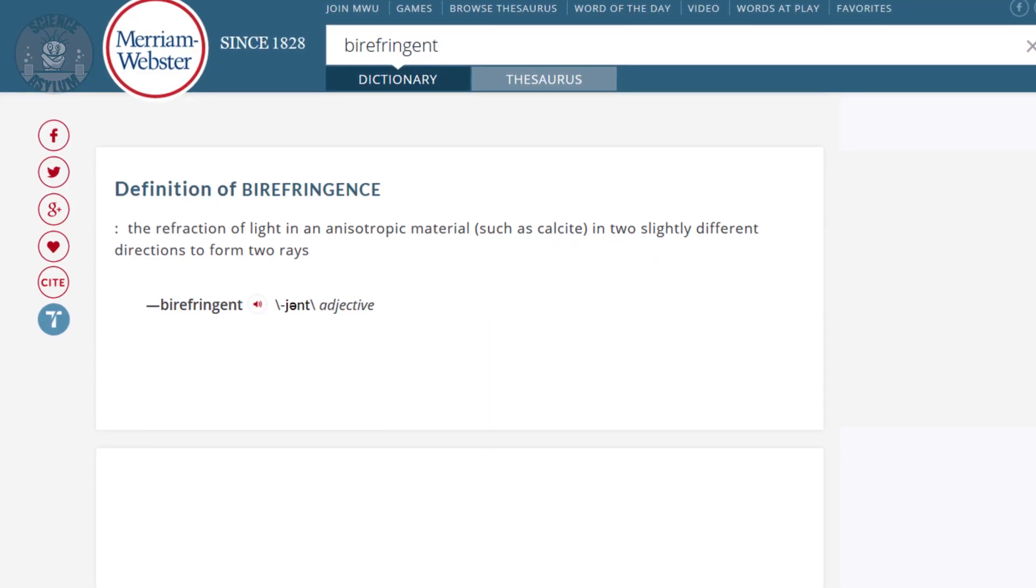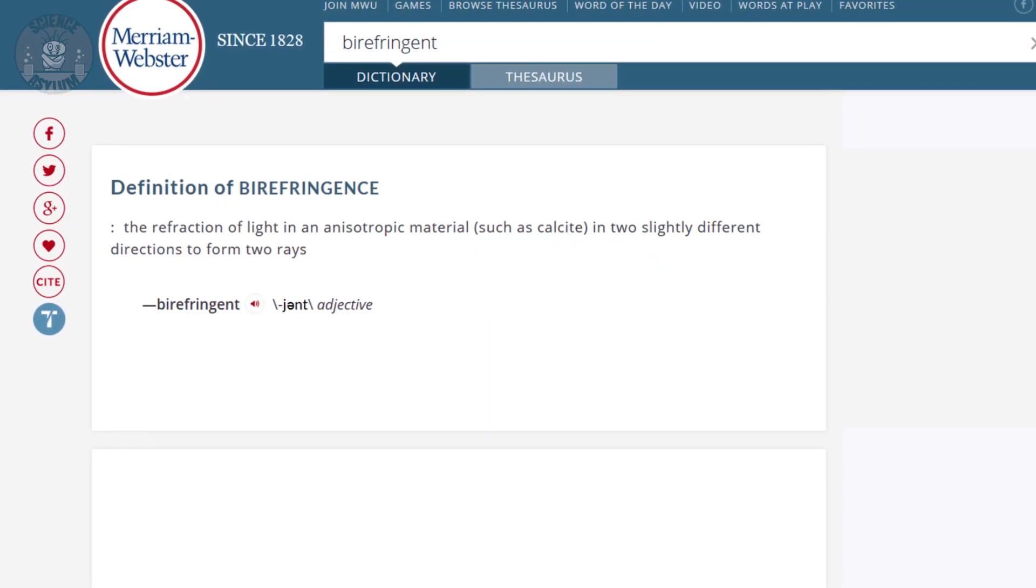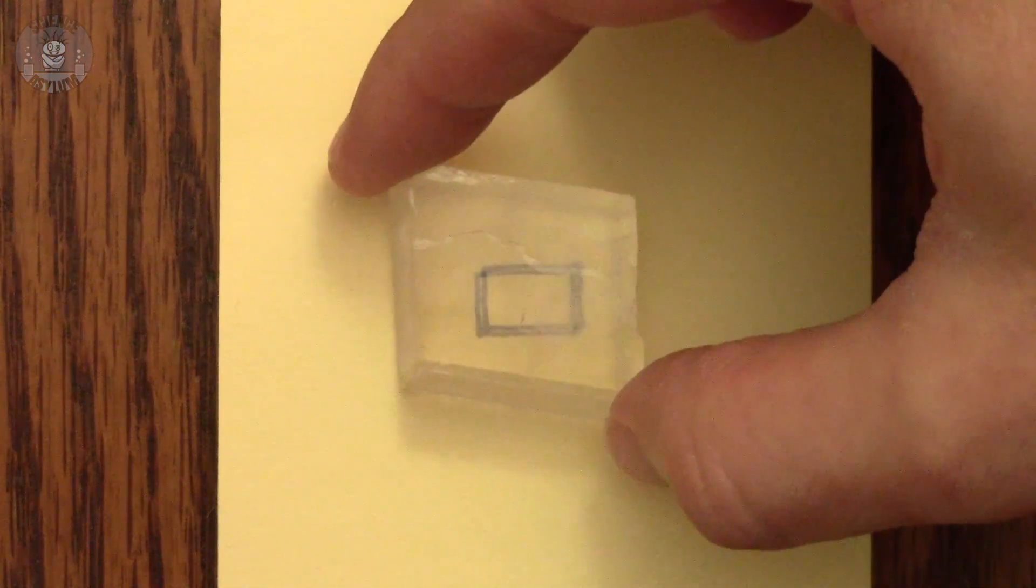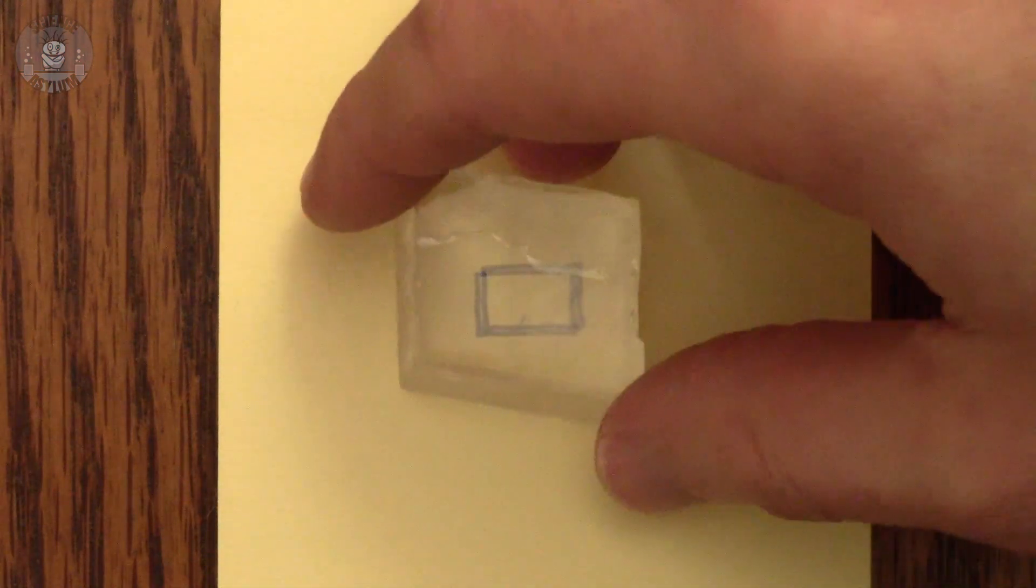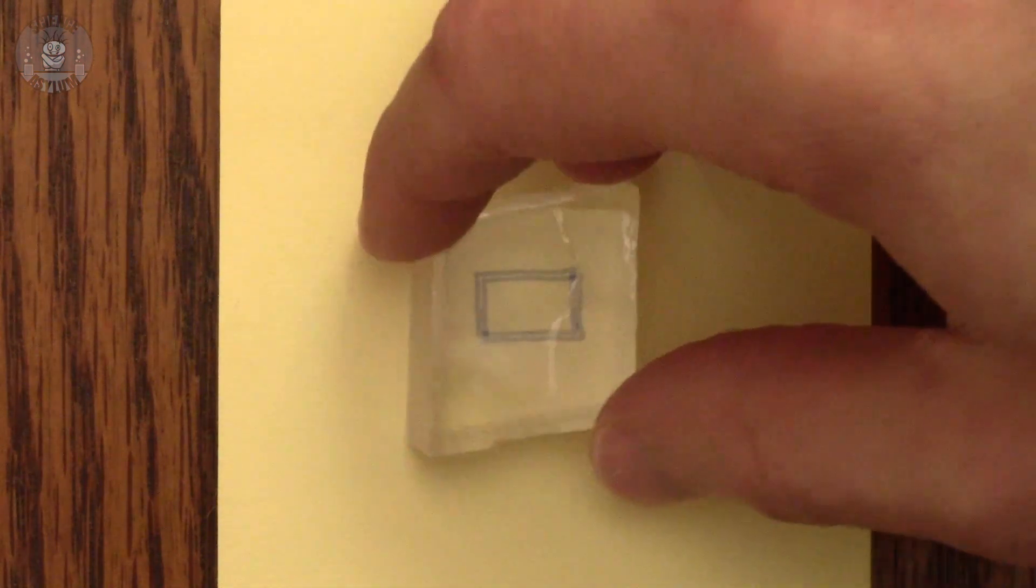Basically, any transparent material will do this. Birefringent means it bends a beam of light in two different directions. This calcite crystal is one example. You can see it forms two different images. Pretty cool, huh?